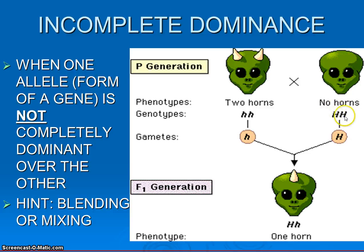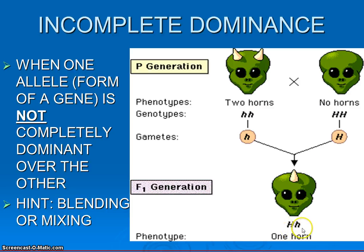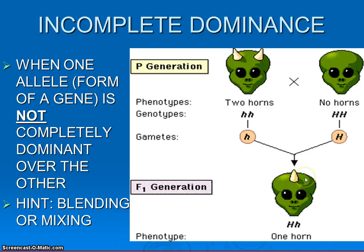Now normally, using these capital letters, we would say no horns is dominant over having two horns. However, when we cross these, hopefully you could do a Punnett square and figure out that all of the kids would be heterozygous. Notice that now we get a blend — they don't have two horns because they don't have two little h's; they don't have no horns either. They're expressing both traits and we get a blending. They come out with an in-between phenotype: one horn.